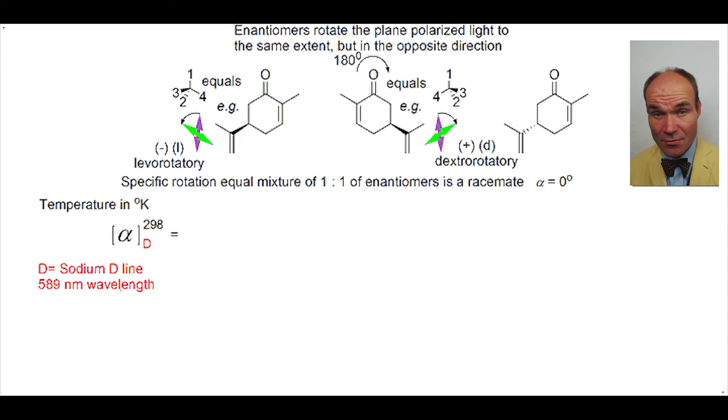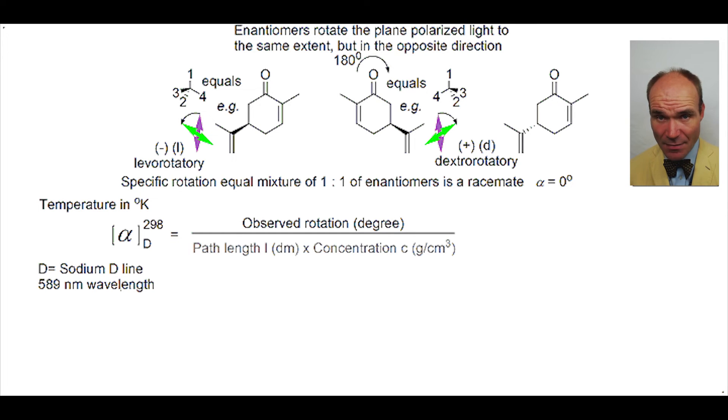And wavelength of 589 nanometers associated with sodium, called the sodium D-line, abbreviated to capital D. It is calculated by the observed rotation divided by the path length of the light through the sample solution, multiplied by the concentration of the sample solution.